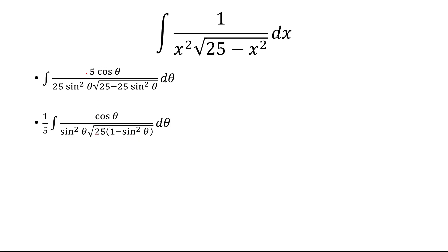And also, 5 over 25 becomes 1 over 5. So this 25 is going to come outside as 5. And then 1 minus sine squared is cosine squared. The square root of cosine squared is cosine, and the cosines are going to cancel.